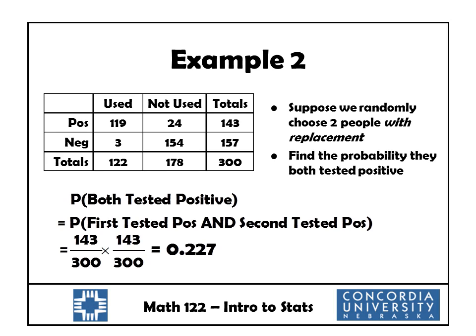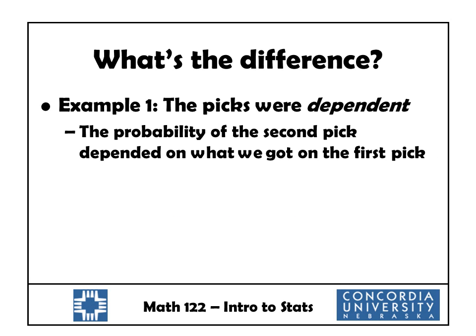Notice that's not very much different than the previous example, but technically it is different. In the first example, the two numbers I multiplied weren't identical — very similar, but not identical. In the second example, they were identical. So what's the difference? In example one, our two picks were dependent, meaning the probability of the second pick depended on what we got on the first pick. The fact that I had already chosen one person that tested positive affected the probability that the second person tested positive.